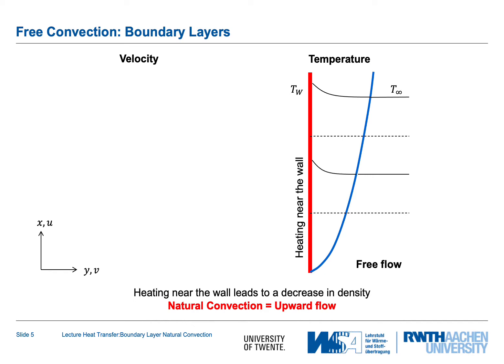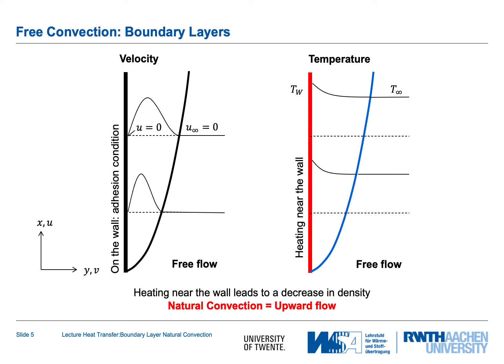Let's look at the free convection case in more detail, particularly the development of the boundary layer. The generic case studied for free convection is a vertical plate — shown in red — that is hotter than the surrounding air. The air far away has a lower temperature, indicated by the boundary layer thickness drawn in blue. At the plate we have a higher temperature; far away a lower temperature. Within this boundary layer, the temperature decreases from the plate temperature to the ambient temperature. Because the wall is hot, the density near the wall is lower than far away, creating an upward flow along the plate.